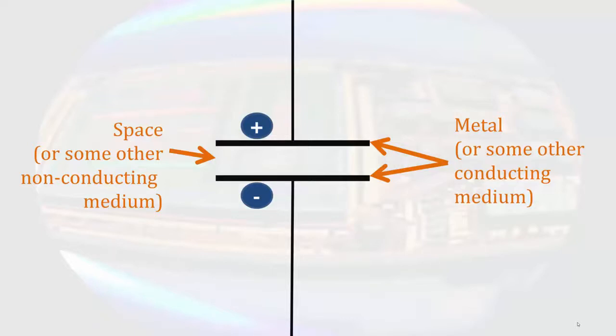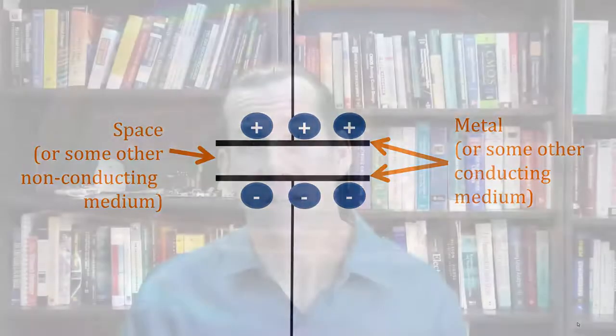Enough of that. For every positive charge we put on the top plate, a negative charge could be held on the bottom plate. Eventually, either we would run out of charges to add or the plates would be as full of charge as they could be.